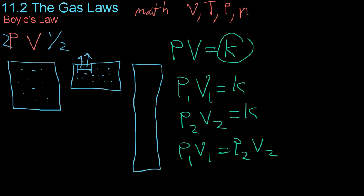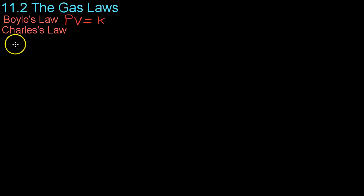Moving on now to Charles's law, which relates the volume and the temperature of a gas. A French scientist by the name of Jacques Charles discovered that heating a gas, that is increasing its temperature and keeping the pressure constant, also led to an increase in the volume.